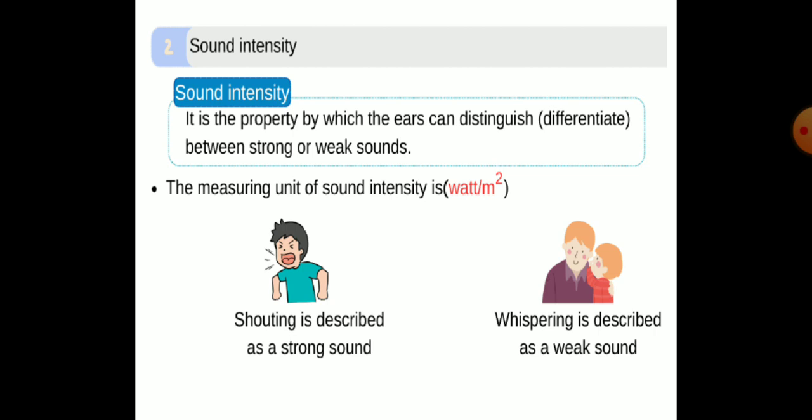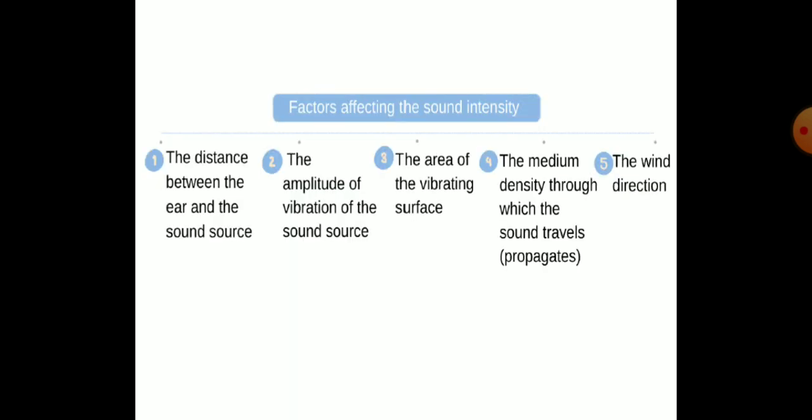Number two: sound intensity. It is a property by which the ears can distinguish between strong and weak sounds. The measuring unit of sound intensity is watt per meter squared. The factors affecting sound intensity are five: number one, the distance between the ears and the sound source; number two, the amplitude of vibration of the sound source; number three, the area of the vibrating surface; number four, the medium density through which the sound propagates; and number five, the wind direction.